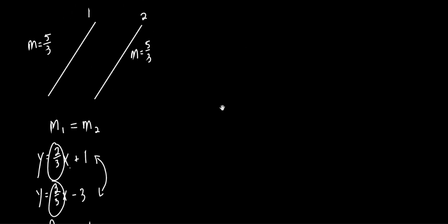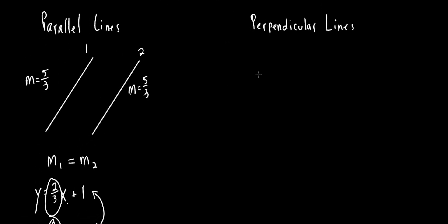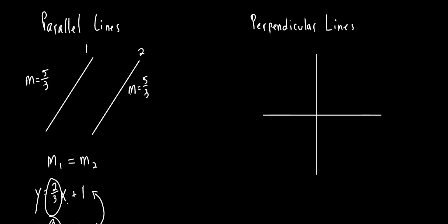Now let's jump over to perpendicular lines. They intersect, but not just any way — they intersect at a 90-degree or right angle. So if I put a right angle symbol there, those two lines are perpendicular. Even if I tilt the whole thing at an angle, as long as they form a 90-degree angle, they're still perpendicular. If they don't form a right angle, they're not perpendicular.